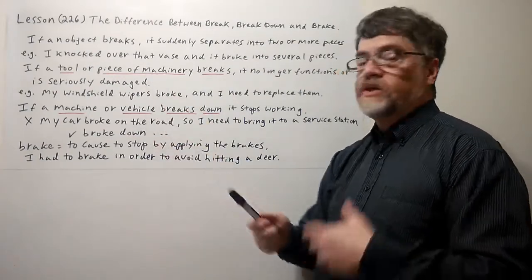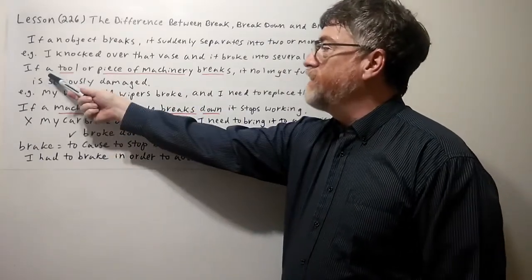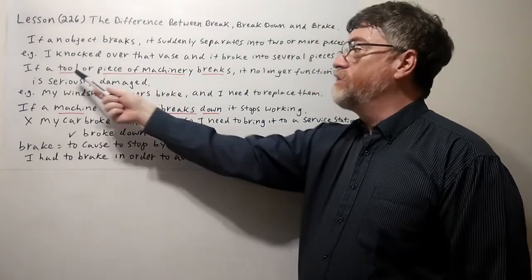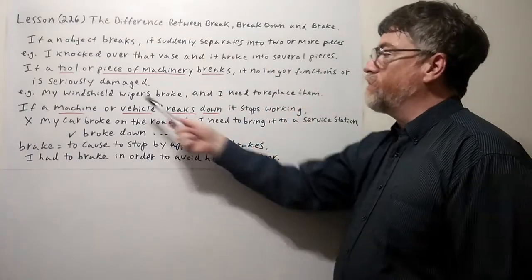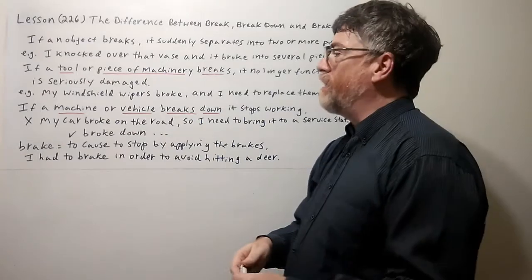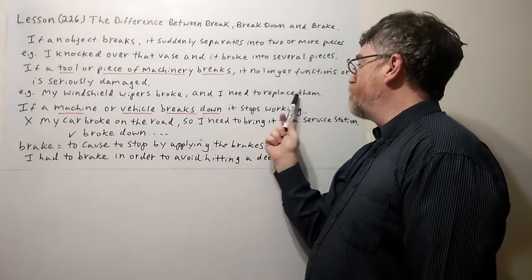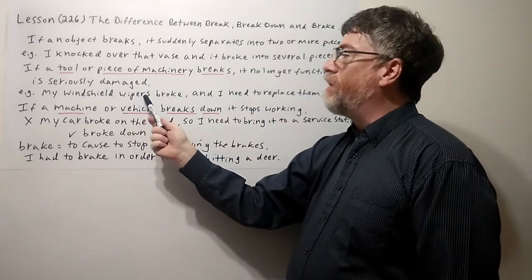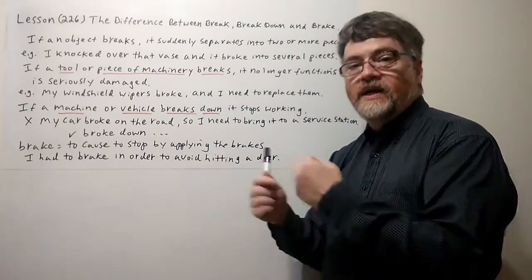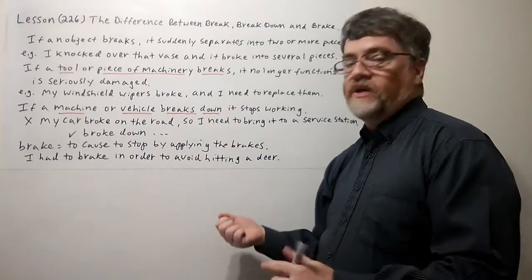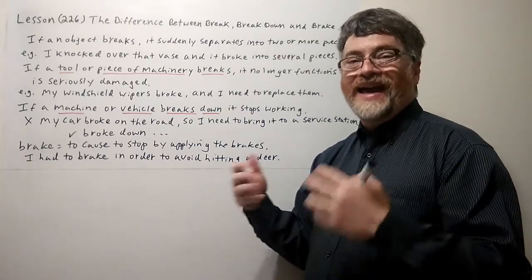Now these two are important because these are the two where students might mess up — the ones with the red underline. If a tool or a piece of machinery breaks, it no longer functions — it no longer works or is seriously damaged. For example: my windshield wipers broke and I need to replace them. Windshield wipers are just a part, a piece of the machinery. So a piece of machinery can break, like the old knob that used to open the window broke.